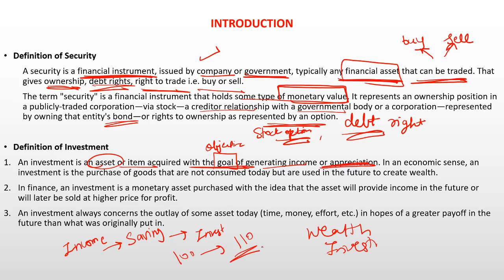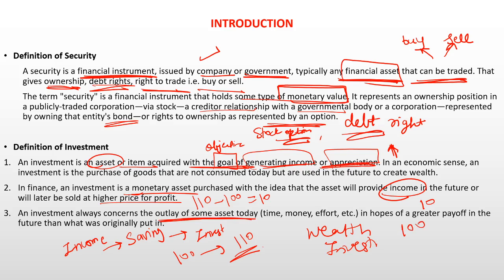That's why we invest. An investment is a monetary asset purchased with the idea that the asset will provide income in the future, or will later be sold at a higher price for profit. For example, we invest 100 rupees today and in future we sell at 110 rupees — that is a profit of 10 rupees. An investment always concerns the outlay of some asset today, and in the future we get a greater payoff — effectively a profit of 10 rupees. That is investment.